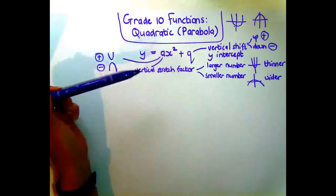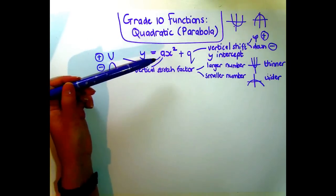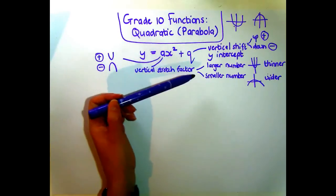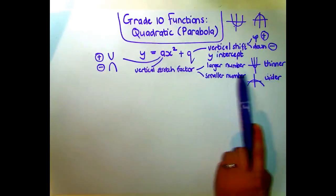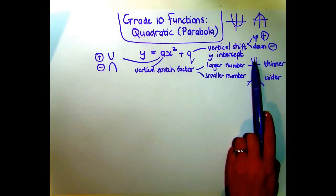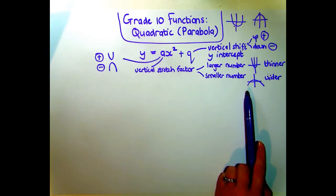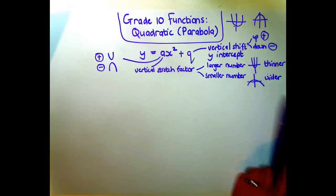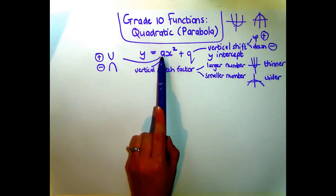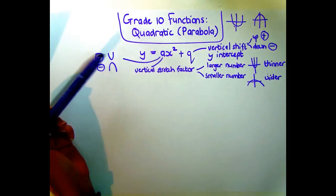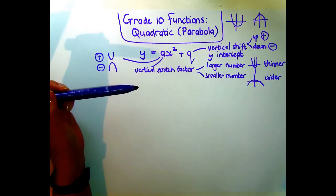The a value is also called the vertical stretch factor because it tells you how thin or wide the graph is going to be. A high a value makes the arms of the parabola closer to the y-axis, while a smaller a value gives a much wider graph. The a value also tells you whether the parabola is happy or sad — positive a means happy, negative a means sad.